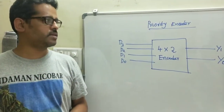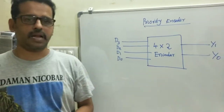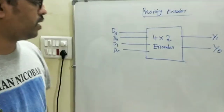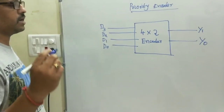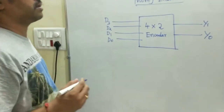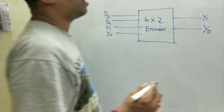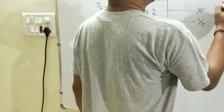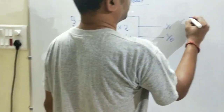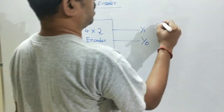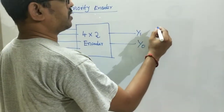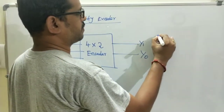That is the idea behind the priority encoder. Now we will draw the truth table, or the function table, of the priority encoder so that the functionality would be further clear.